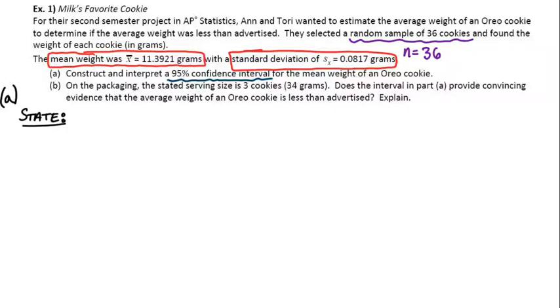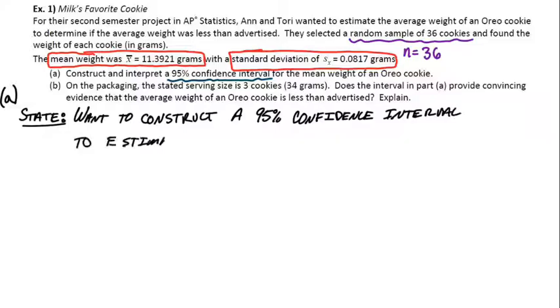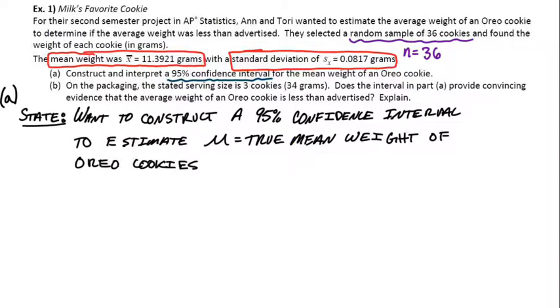So what's our plan? We want to construct a 95% confidence interval. Our goal is to estimate mu, which is the true mean of Oreo cookies in terms of their weight in grams. And I actually need to make some room here because that is an important point to know. We're measuring their weight in grams. We're looking for the true mean, basically, of all Oreo cookies. So we mentioned the confidence level. We said what we were trying to capture, and we gave it some context. So we're good for the state step.